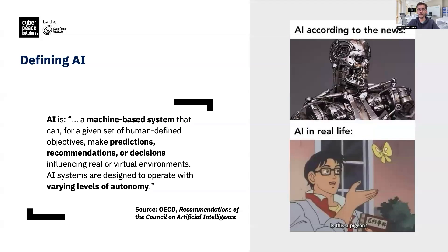Let's start with the basics now. AI, or artificial intelligence, is defined as a machine-based system that can make predictions, recommendations, or decisions based on human-defined goals. These systems can work with varying degrees of autonomy, meaning they can sometimes act independently of human input.